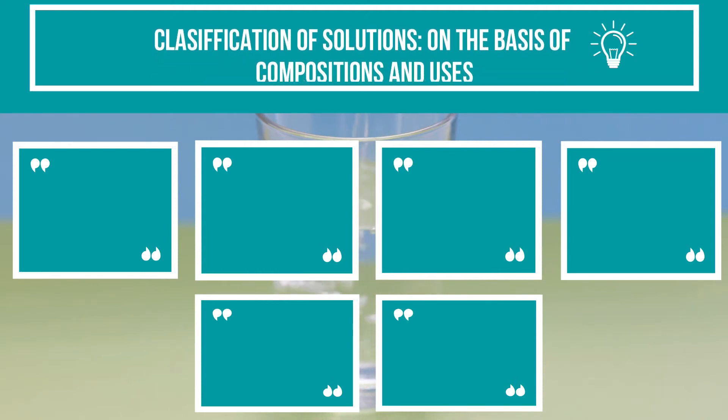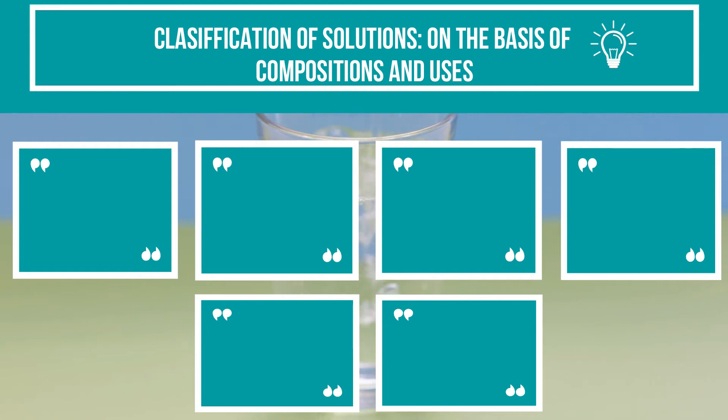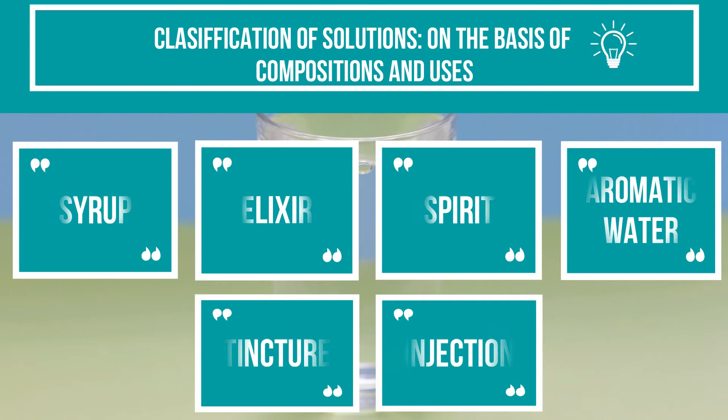According to composition and uses, it can be of six types: syrup, an aqueous solution containing sugar; elixir, a sweetened hydroalcoholic combination of water and ethanol solution; spirit, a solution of aromatic materials in alcohol; and aromatic water, a solution of aromatic materials in water.